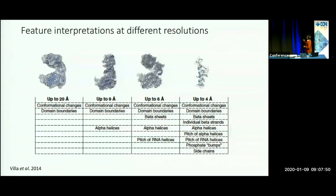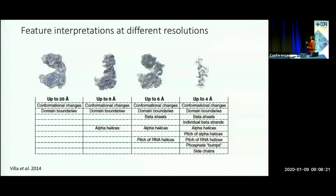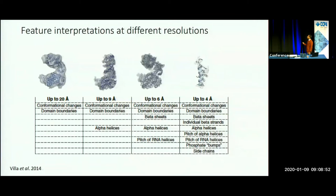You would have to treat different parts of the map differently when you try to build or refine or validate a model. You'll see different features depending on the resolution. For example, up to 3.5-4 angstroms you can see at least the bulky side chains and interpret finer details like side chain interactions. Beyond 4 angstroms, you lose that level of detail but can still identify secondary structures such as alpha helices, beta strands, and domain shapes. We need different methods for fitting and different validation tools for different resolutions.